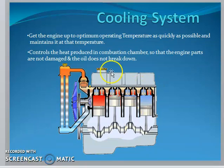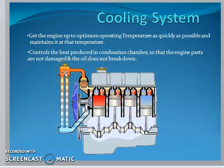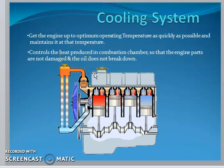This is the simple working function of the cooling system. It shows four cylinders, the engine manifold, a radiator, a radiator fan, the crankshaft connected through the connecting rod and piston, and a radiator cap. The main function of the cooling system is to bring the engine up to optimum operating temperature as quickly as possible, maintain it at that temperature, and control the heat produced in the combustion chamber so that engine parts are not damaged and the oil does not break down.